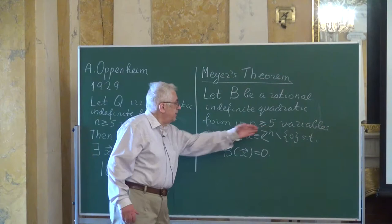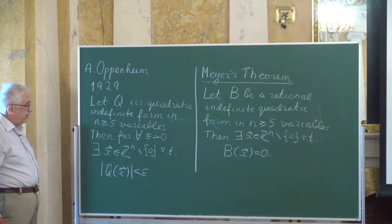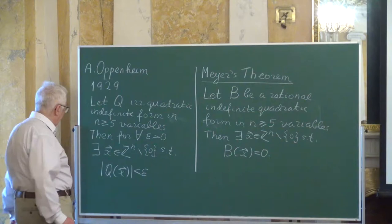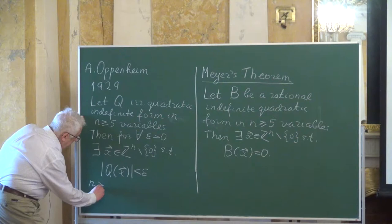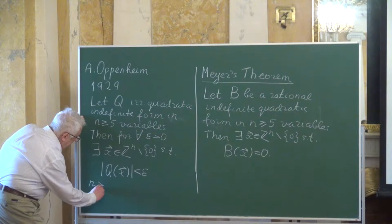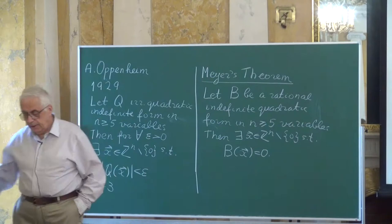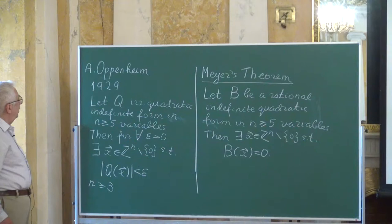That is why the assumption n ≥ 5 appears in Oppenheim's original conjecture. Later it was realized that for irrational forms one can weaken this assumption to n ≥ 3. This was realized by Davenport and his co-authors, and also by Oppenheim himself, but probably only in the late 1940s or 1950s.